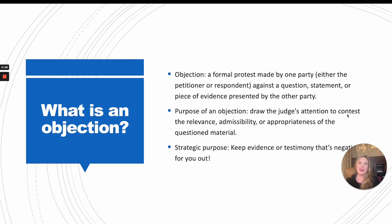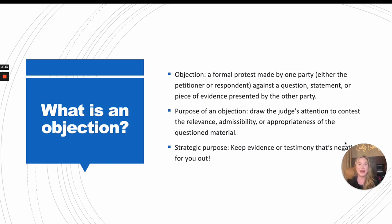First, let's talk about what an objection is. Technically, it's a formal protest made by one party — could be the petitioner or the respondent — against a question, a statement by a witness, or a piece of evidence presented by the other party. The purpose of an objection is to draw the judge's attention to contest the relevance, admissibility, or appropriateness of the question or material. But really, what we're trying to do is keep evidence out — any evidence that is not good for you.